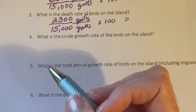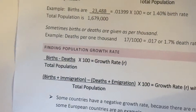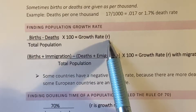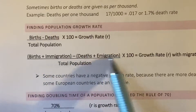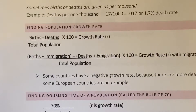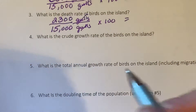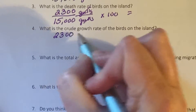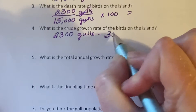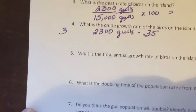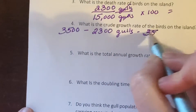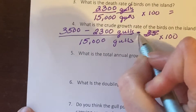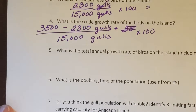What's the crude growth rate? The crude growth rate means no immigration — it's births minus deaths over total population. The second formula for growth rate includes migration, with immigration meaning coming in and emigration meaning leaving. So for crude growth rate, we use births minus deaths over total population. That's 3,500 births minus 2,300 deaths — wait, births first — over 15,000. I'll let you do that calculation.